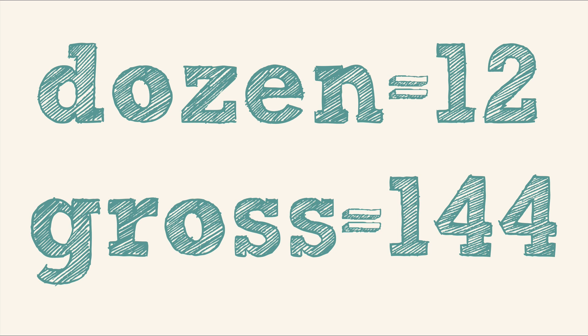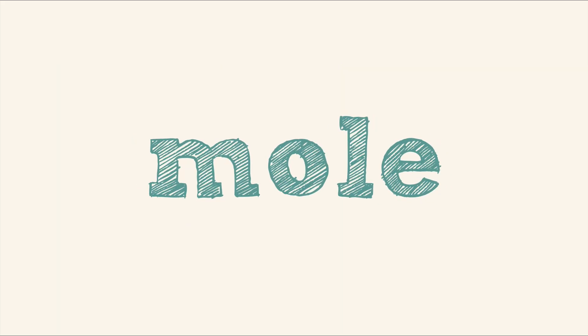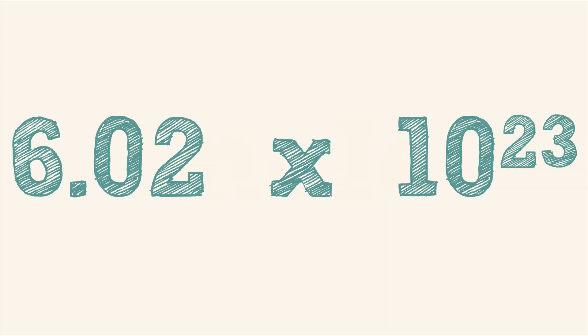In chemistry, we deal with really, really, really tiny substances — atoms. So we need really, really, really big numbers to have amounts we can actually work with. So we use the mole. A mole is a number, just like a dozen is a number. This number is 6.02 times 10 to the 23rd power. That's 602 with 21 zeros after it.